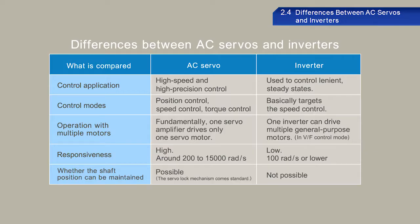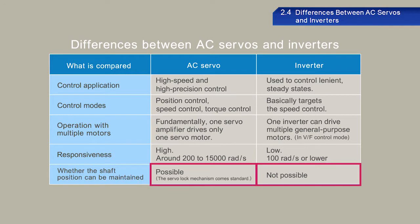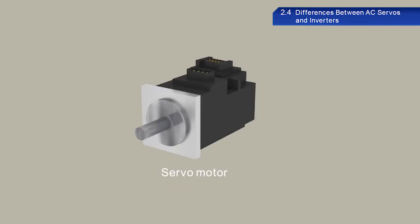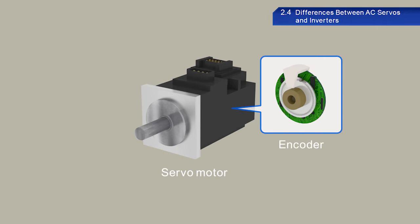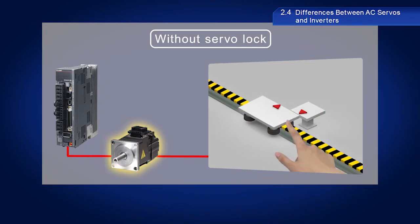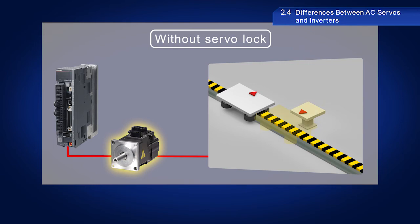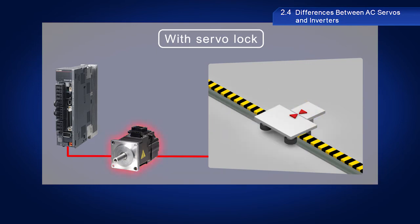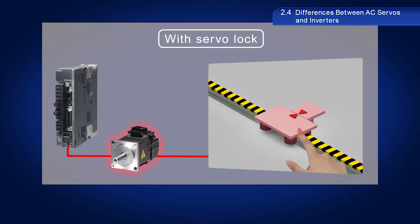The most important difference is that AC servos have a servo lock, whereas inverters do not have any locking mechanism. This functionality is enabled by the encoder included in the servo motor configuration. Servo lock refers to the state in which the servo motor maintains control of an object so as to keep the object in the desired position. Without servo lock, external force applied to an object can move the object out of position. With servo lock, the servo motor can move an object that has been moved out of position back into position.